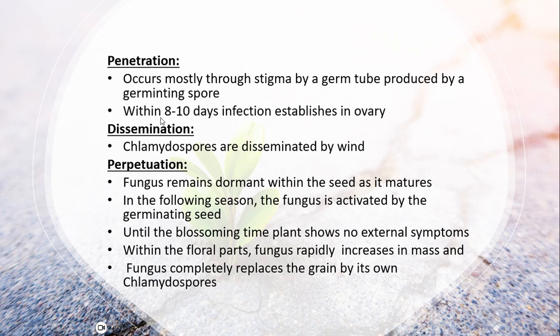Within eight to ten days, infection establishes in the ovary. The chlamydospores are disseminated by wind and splashes. For perpetuation, over-seasoning of this fungus takes place mainly in the seed. The fungus remains dormant within the seed as it matures. In the following season, the fungus is activated by the germinating seed. Until blossoming time, the plant shows no external symptoms. Within the floral parts, the fungus multiplies and completely replaces the grain with chlamydospores.